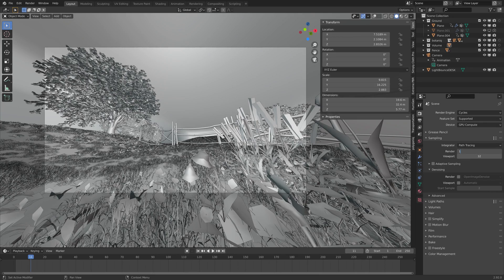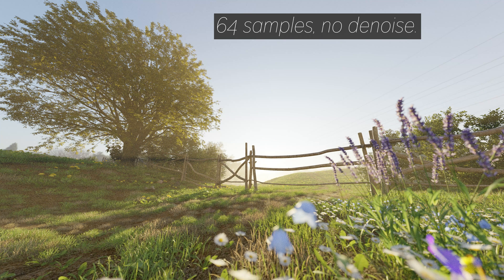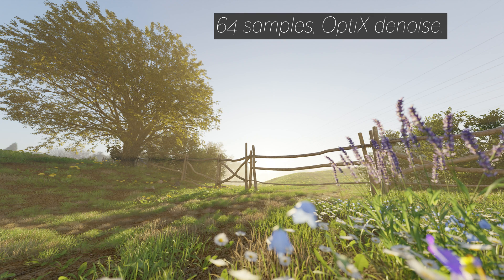The other way is to use a higher sample rate. So let's compare the results with different numbers of samples and the different types of denoisers. This is the first image with 64 samples and no denoising. When we add a denoiser, you can see that the image looks a lot better — some basic denoising. And then with the OptiX denoising, you can see that the result is basically the same as for the two other types of denoisers.